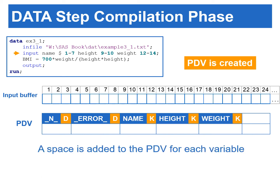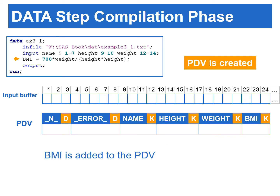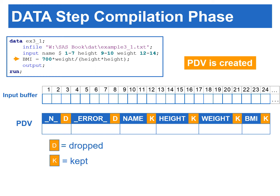During the compilation phase, SAS scans each statement. When it scans the INPUT statement reading the name, height, and weight variables, SAS allocates one space for each of these variables in the PDV. When it scans the assignment statement, BMI is also added to the PDV. Some variables in the PDV are marked with D, which stands for dropped, and others are marked with K, which stands for kept. Only variables marked with K will be written to the output data set. Automatic variables are always marked with D, so they are never written out.